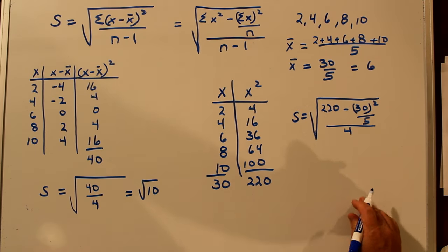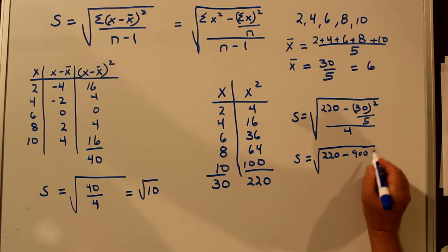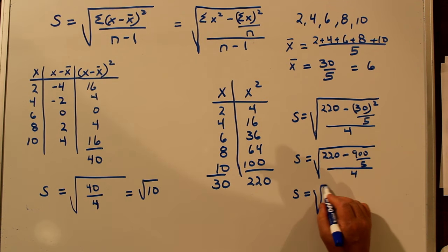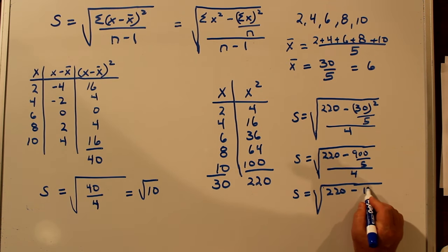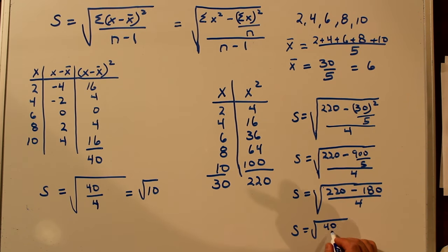So we have 220 minus 900 over 5, all over 4. That's the square root of 220 minus 180, all over 4. 220 minus 180 is 40 over 4, or square root of 10. We get the same number.